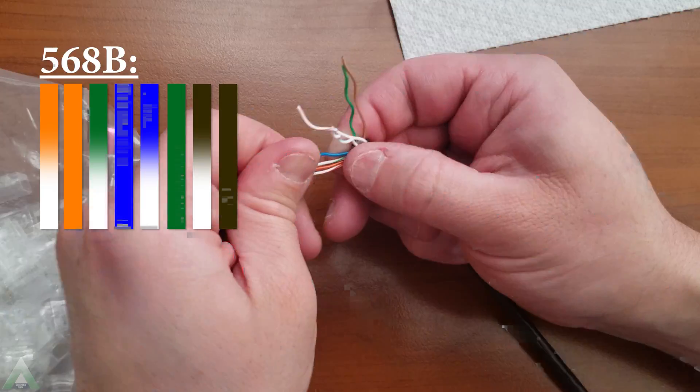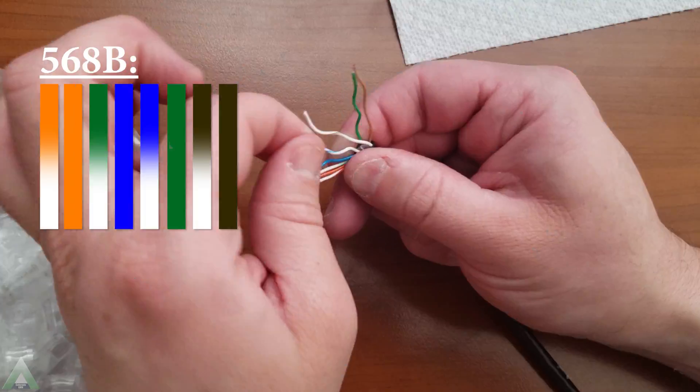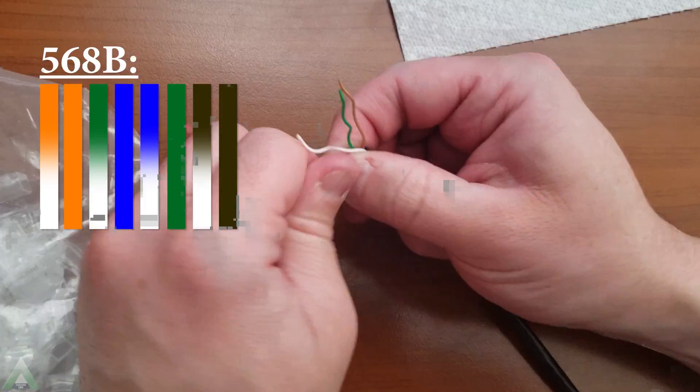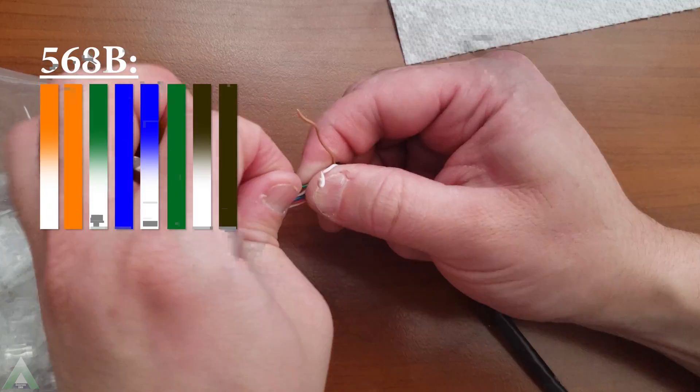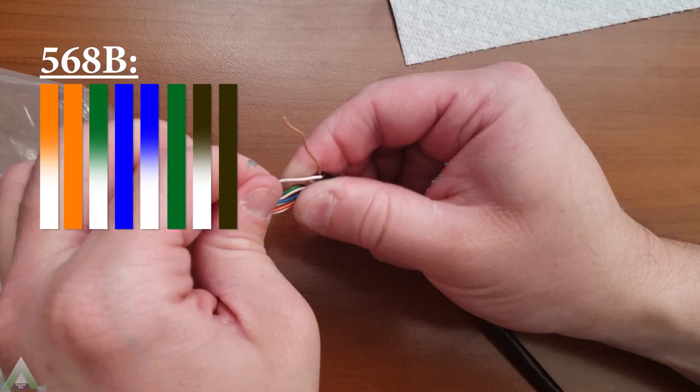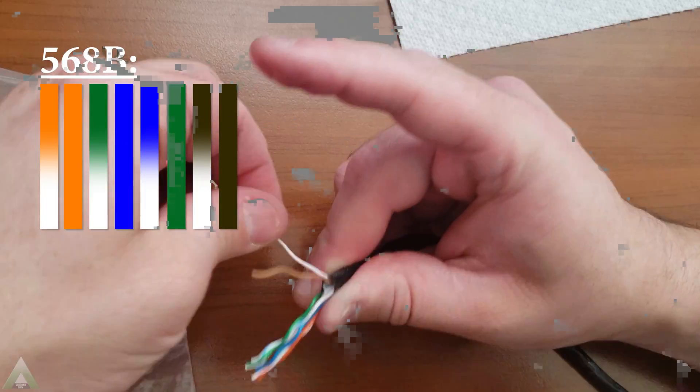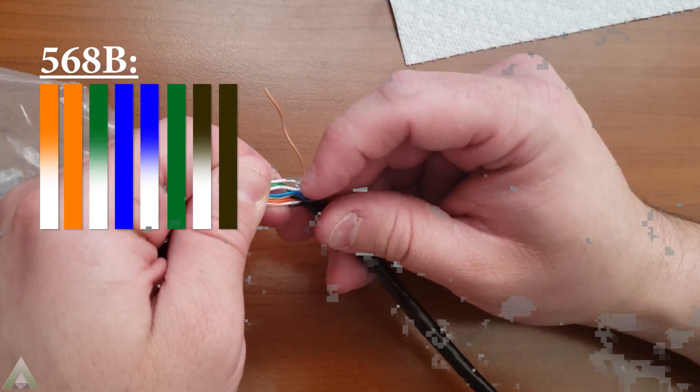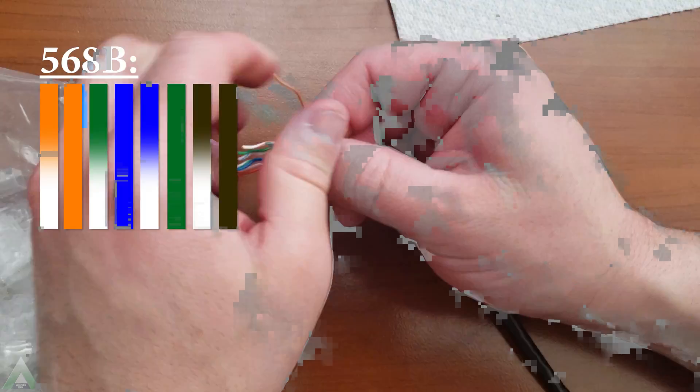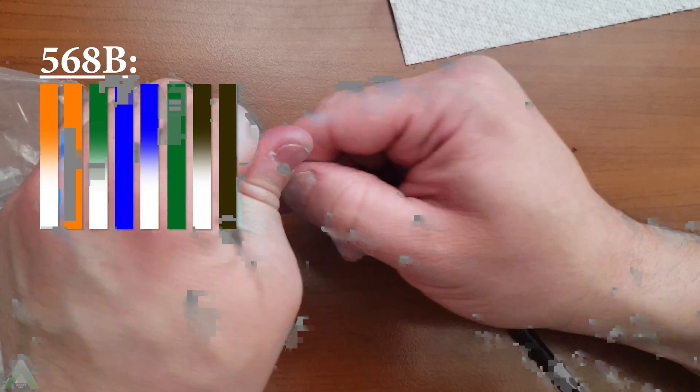Now that we're back in focus. Orange white, orange, green white, blue. Then blue white, green. And then brown white, brown. When you're looking at the wires, see where they're arranged so when you untwist them and arrange them, they're gonna be the most direct way without causing any unnecessary twist.